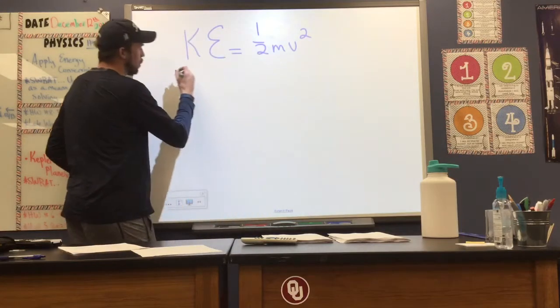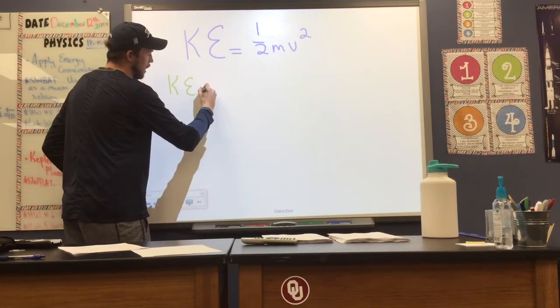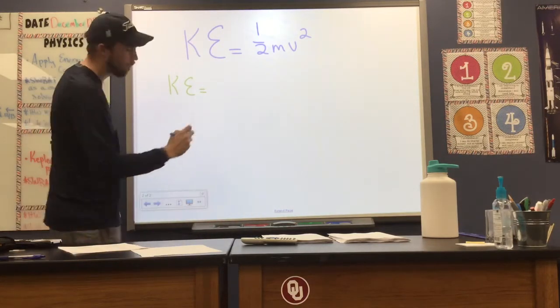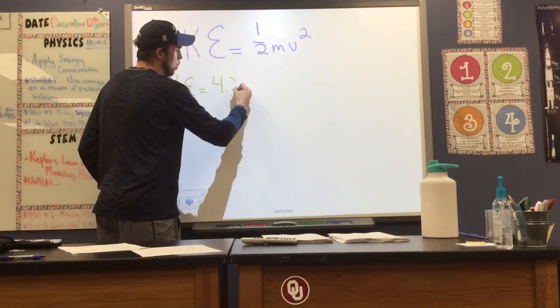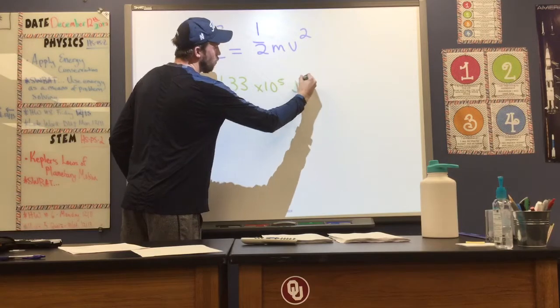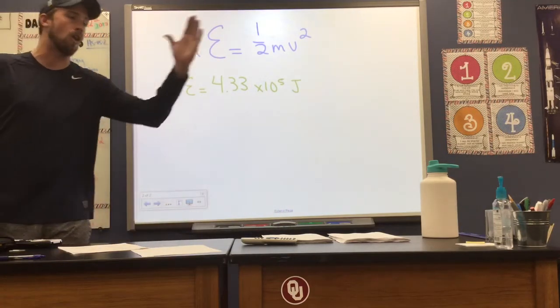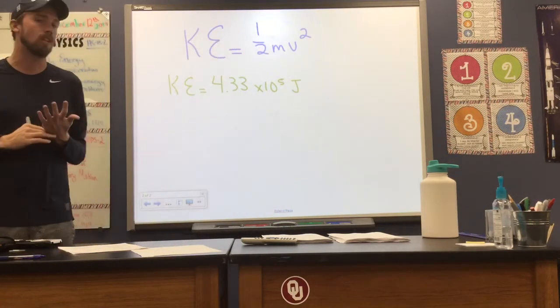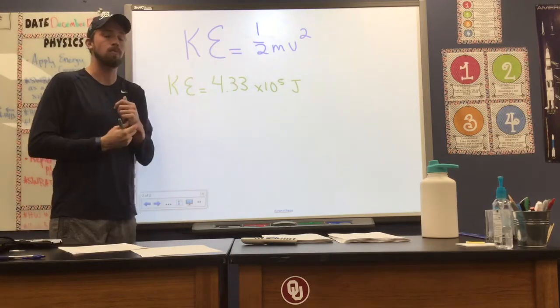So let's take into account some of the variables that we have. We're given a value of kinetic energy, 4.33 times 10 to the fifth joules. Now that's a pretty large value for kinetic energy, but remember, kinetic energy is dependent on the mass of an object and its velocity.